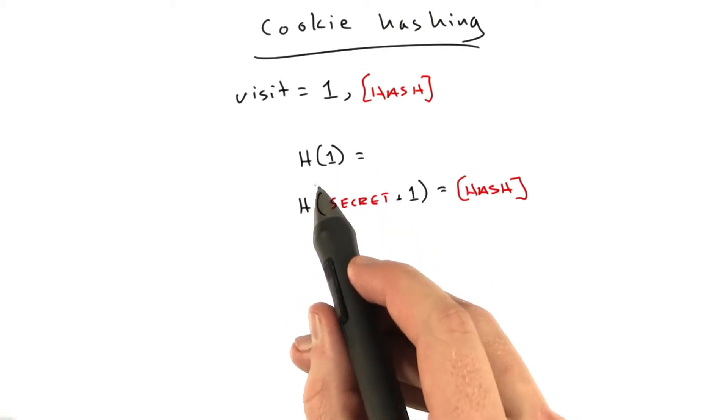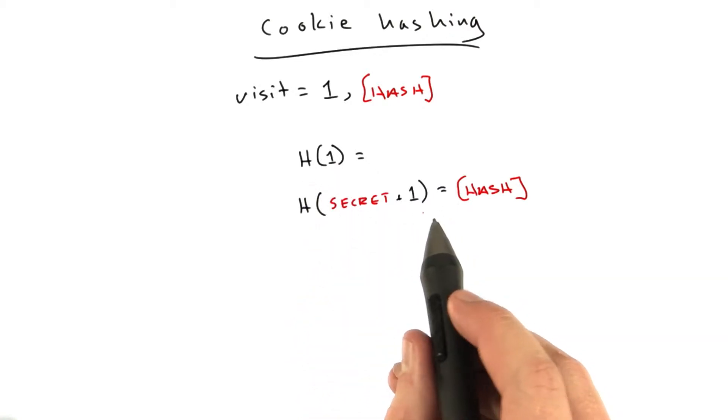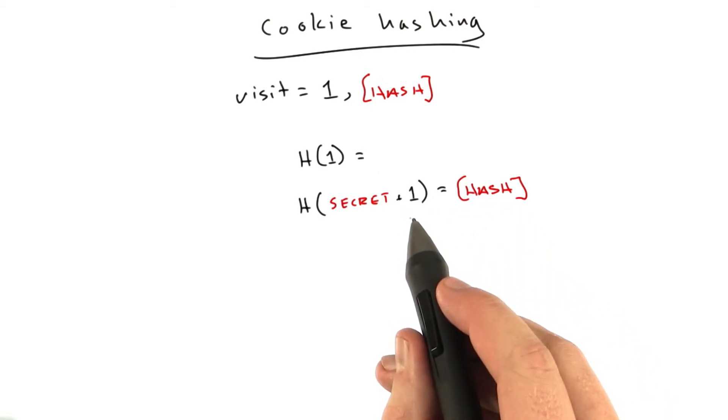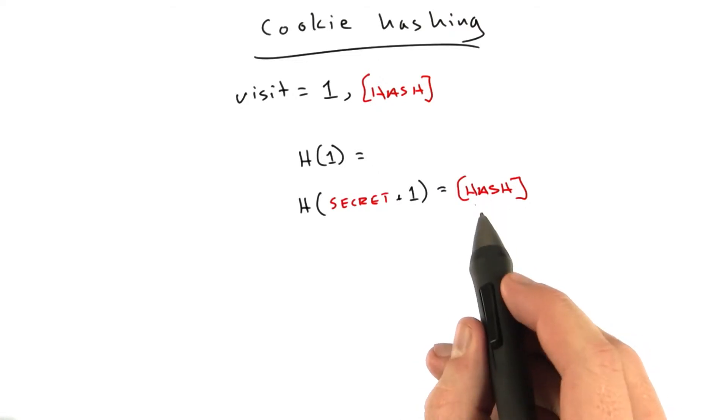Because, remember, one of the properties of our hashing algorithms is it's very difficult to find two inputs that equal the same hash, or to find a specific input for a specific hash, and vice versa.